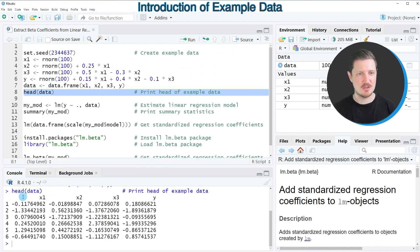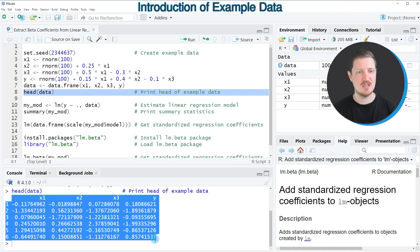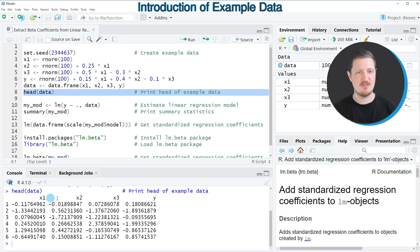And then you can see at the bottom in the console that we have created a data frame that contains four columns, whereby the first three columns x1, x2 and x3 will be used as predictor columns and the fourth column y is our target variable.